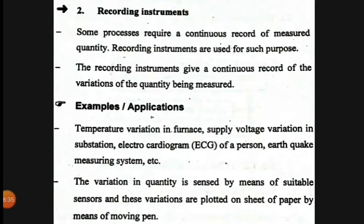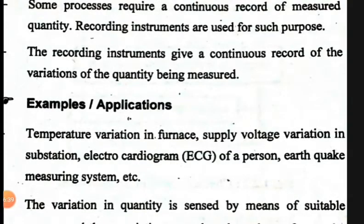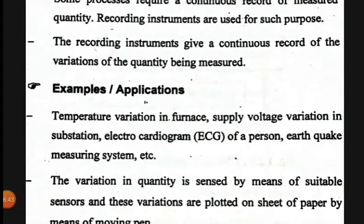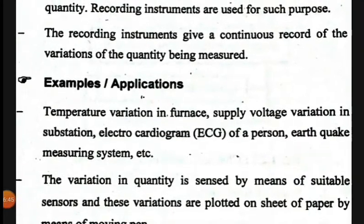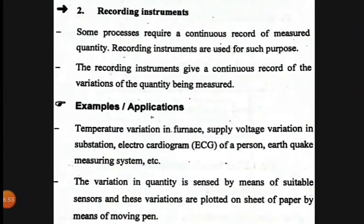The recording instruments give a continuous record of the variations of the quantity being measured. For example, temperature variation in a furnace, supply voltage variation in a substation, electrocardiography of a person, and earthquake measuring systems. The variation in quantity is sensed by means of suitable sensors, and these variations are plotted on a sheet of paper by means of a moving pen.